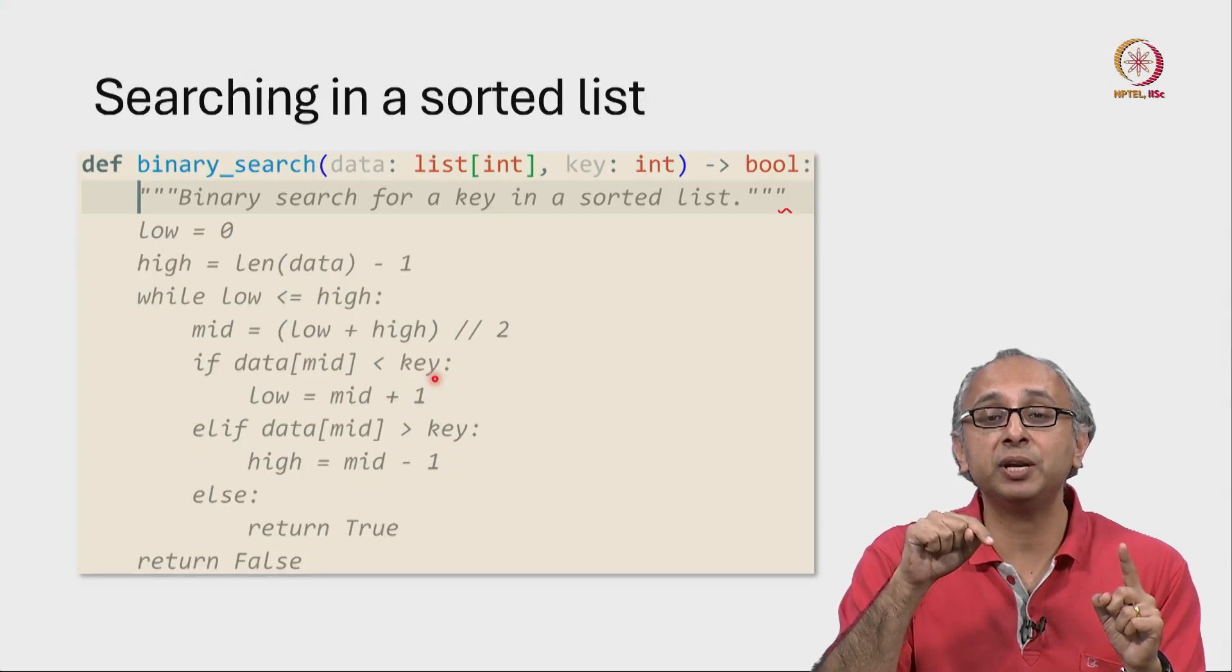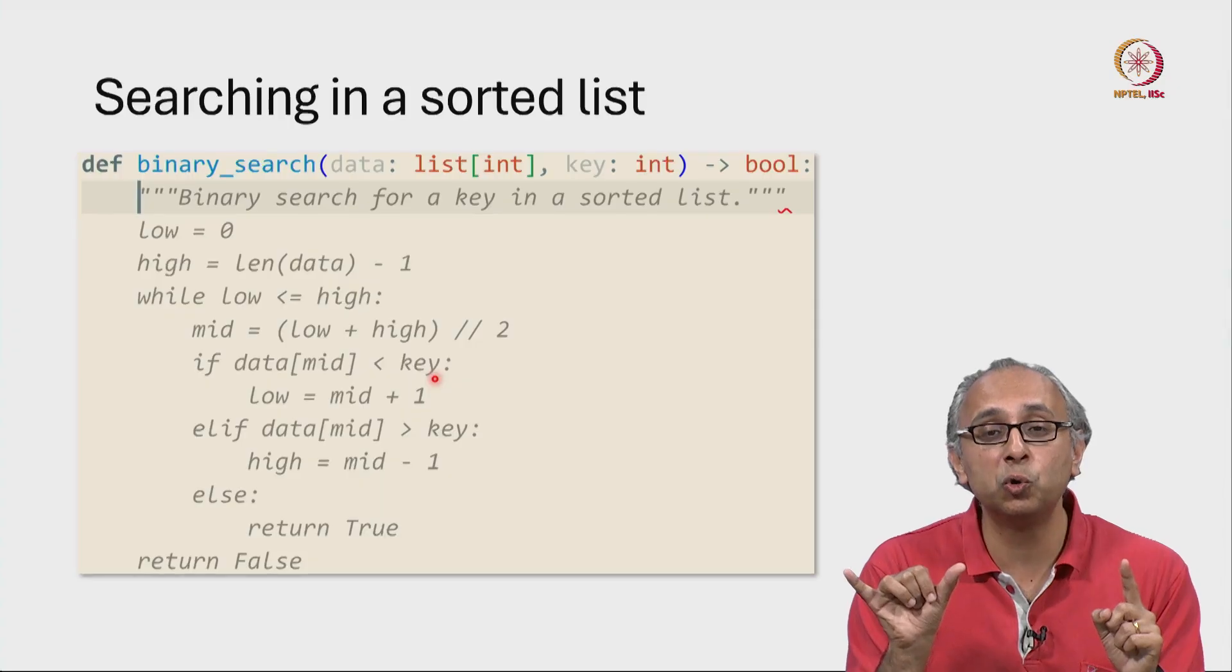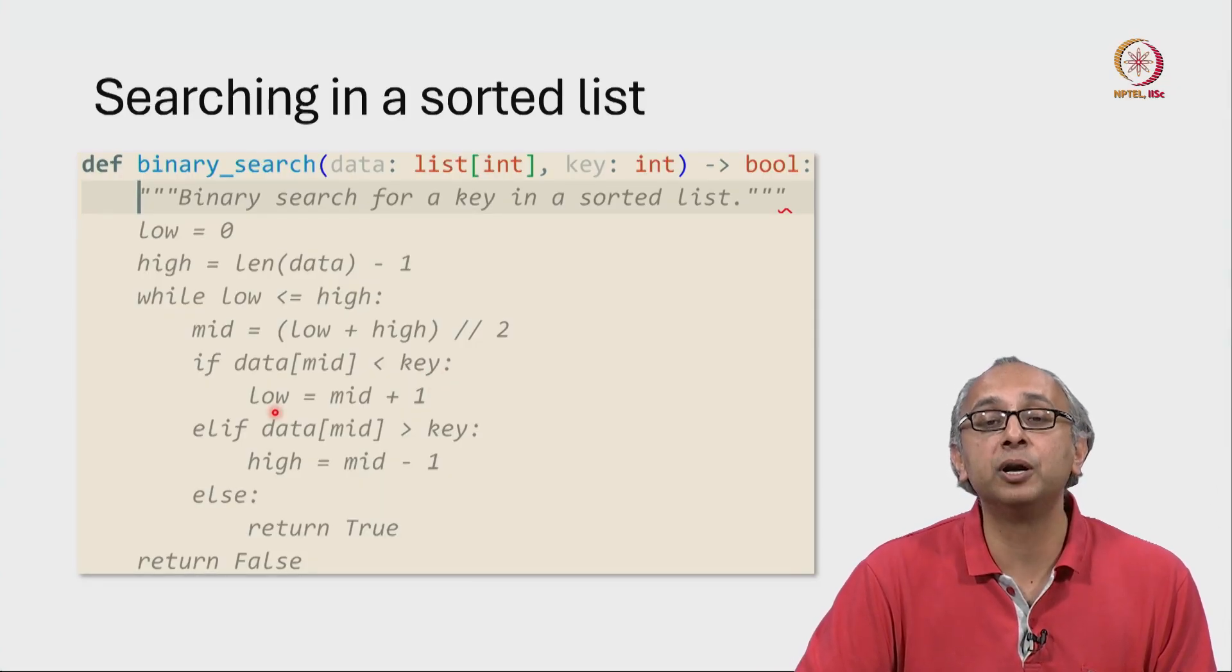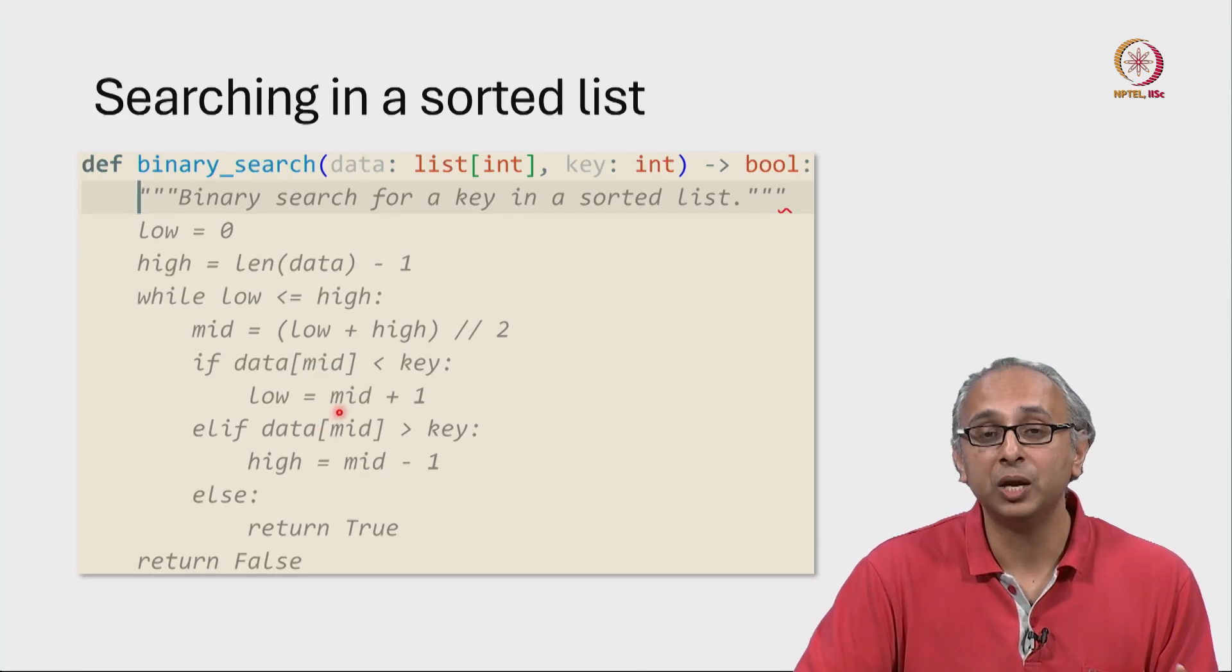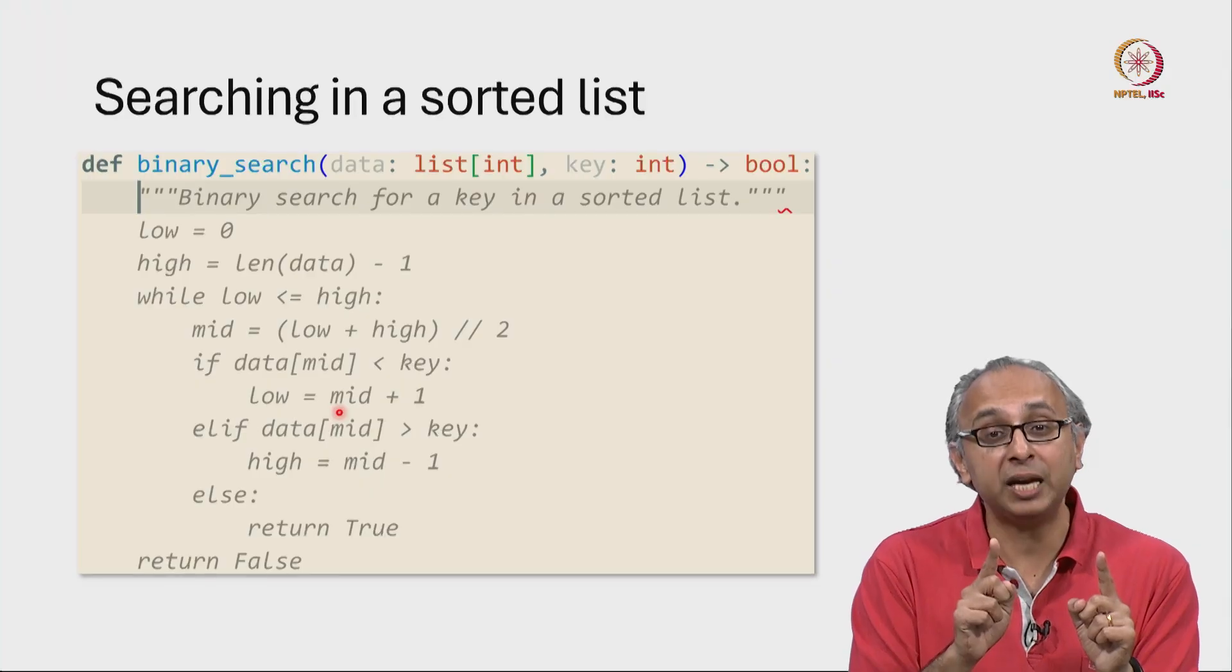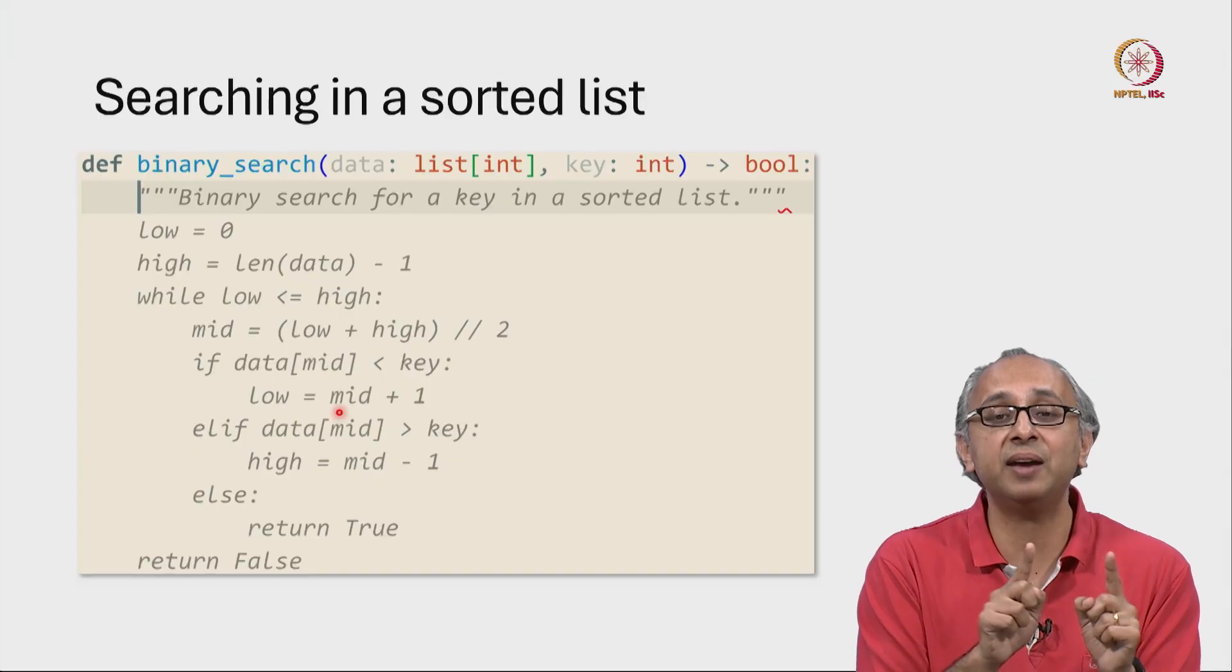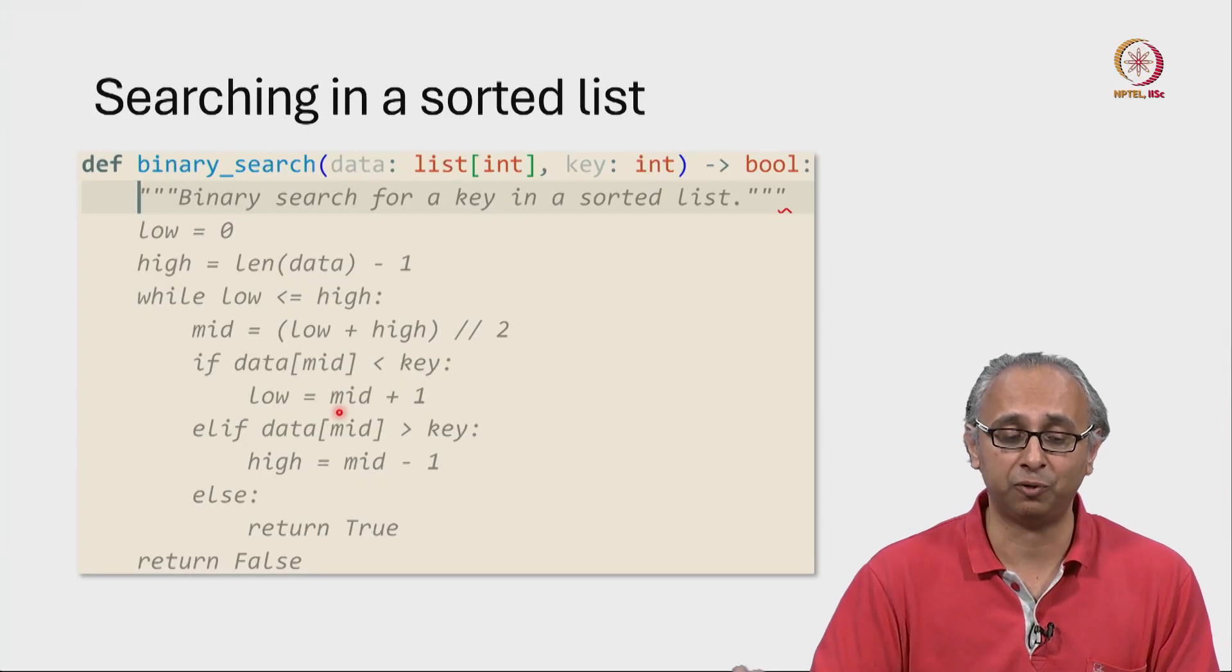The value in the middle is already too small, there is no point searching in the low region. So in that case we can update our low to mid plus 1. Then we looked at the mid point, that was not what we were looking for, that was too small. So we should look at the region mid plus 1 up to high, it is in this higher end of the region where we have a chance of finding what we are looking for.